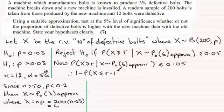Given that X is distributed as a Poisson with a mean of 6 approximately, then that's got to be less than or equal to 0.05.